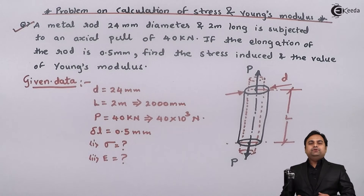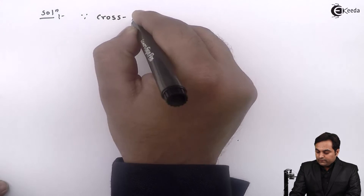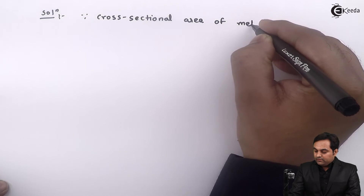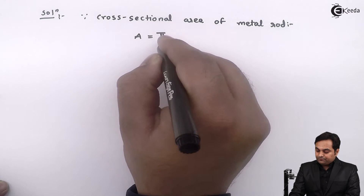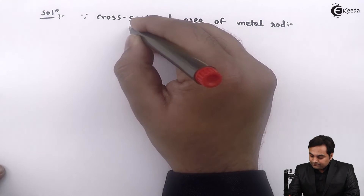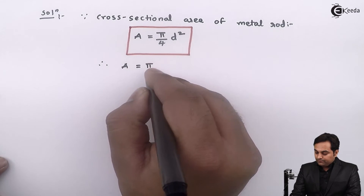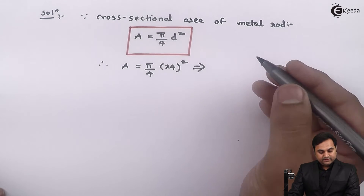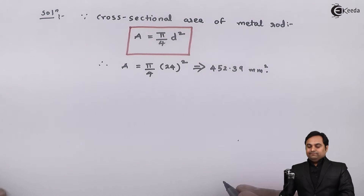Now let us get the solution. Since the cross-sectional area of the metal rod is denoted by capital A, it is equal to pi by 4 times d squared. Therefore, capital A is equal to pi by 4 into 24 squared, which gives the area as 452.39 mm squared.